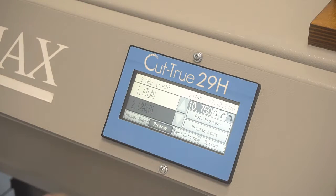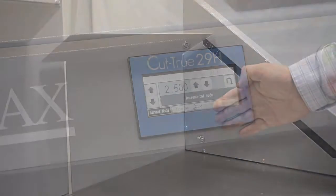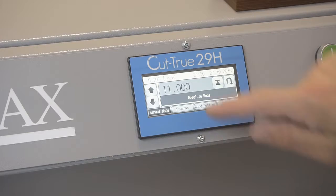Both models feature programmable job settings, an infrared light beam safety curtain, and an LCD touchscreen control panel for quick and easy setup and operation.